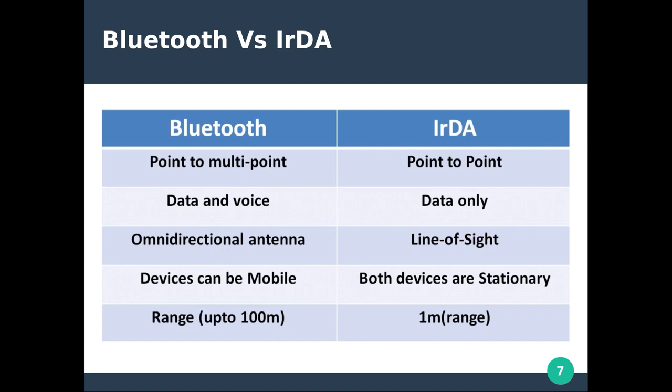IrDA uses high-frequency infrared waves requiring line-of-sight and directional antennas, but Bluetooth uses an omnidirectional antenna with no line-of-sight requirement. With IrDA both devices must be stationary, while Bluetooth allows mobile devices. IrDA supports only about 1 meter range, whereas Bluetooth supports up to 100 meters — this comparison shows how special Bluetooth is compared to similar contemporary technologies.